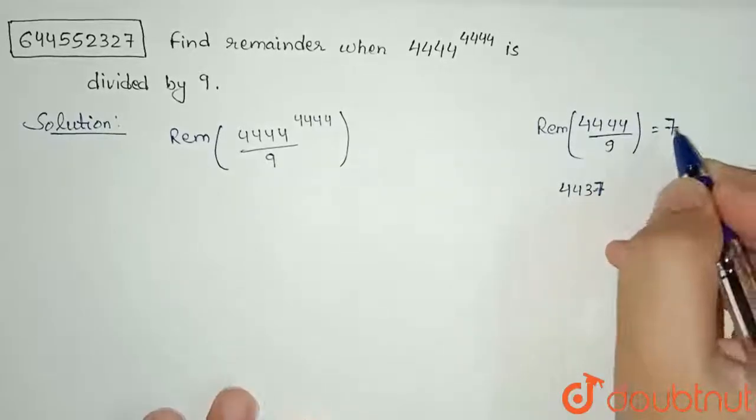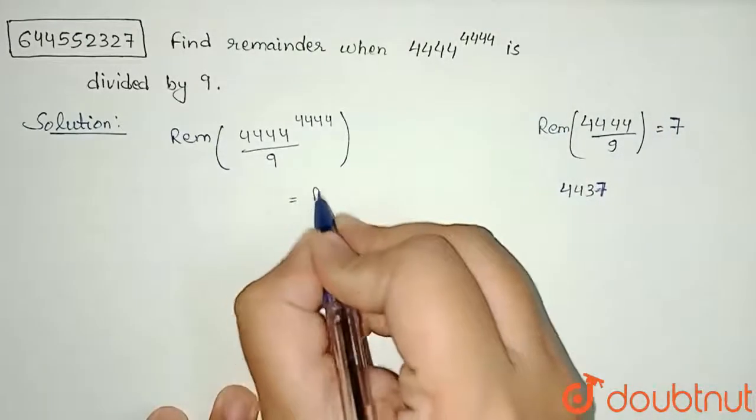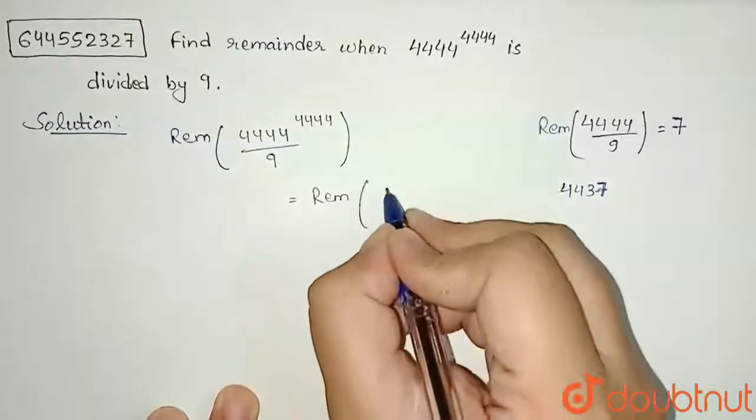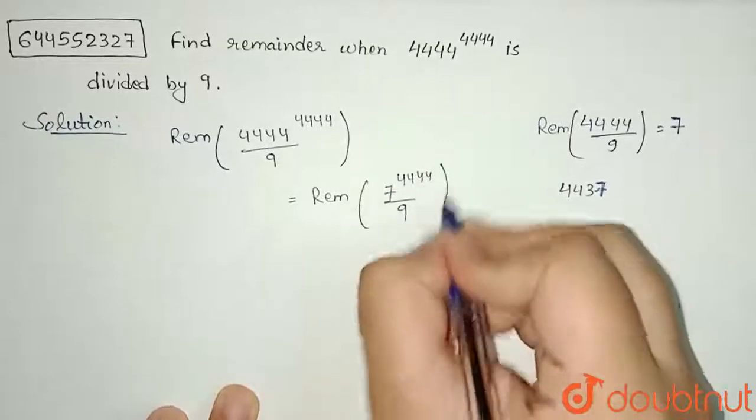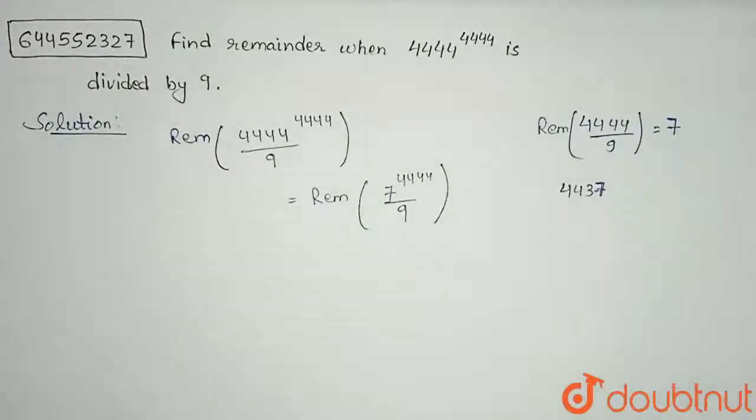So instead of this, I can write this will be equal to remainder when 7 to the power 4444 divided by 9, because for this, remainder is 7 here.